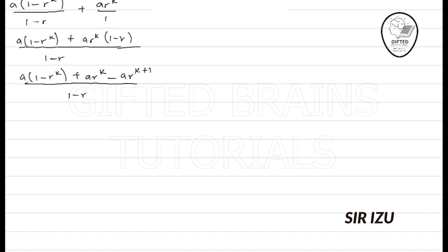So if we do that carefully, we would have, open the bracket on the left-hand side actually. We have A minus AR to the k plus AR to the k minus AR to the k plus 1, raised to the power k plus 1 actually, over 1 minus R. So this will eliminate this first of all.